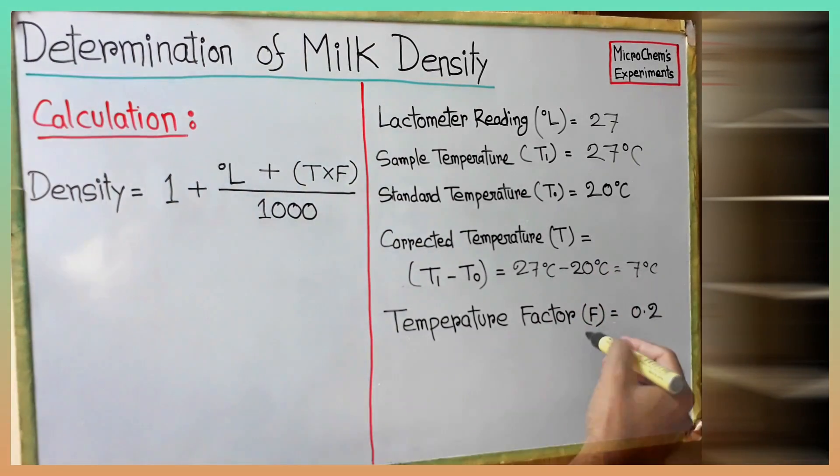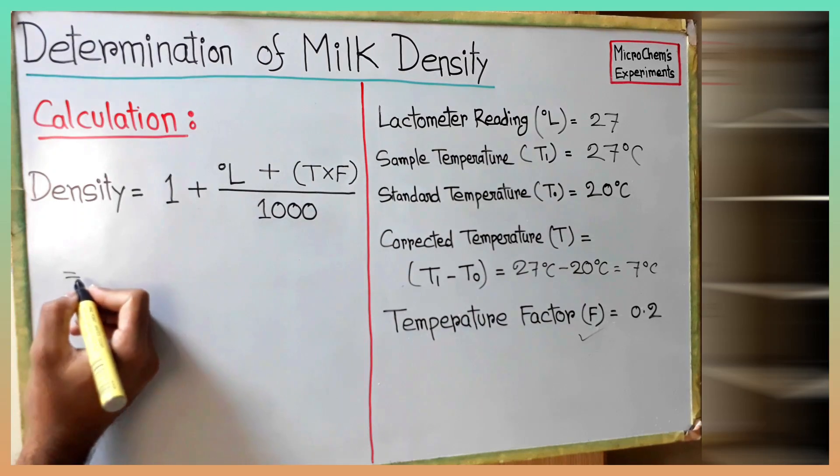Temperature factor F is 0.2. Let's put the values in the equation given on the left side of the board.